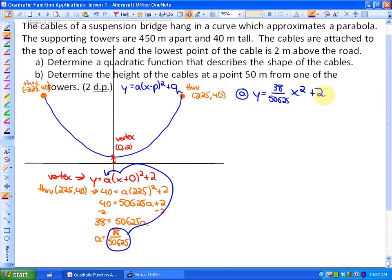The question for b says, determine the height of the cables at a point 50 meters from one of the towers. So 50 meters from one of the towers would be either 50 meters from this tower or 50 meters from the right tower. Now we're going to have to, in order to determine any point on this quadratic function, we can determine that using the quadratic function itself. You can give an input or an output and solve for the other coordinate and that will give you one of the points. In this particular case, since we're looking at a point 50 meters from one of the towers.